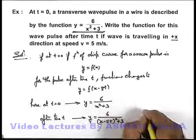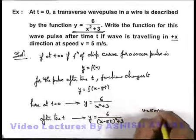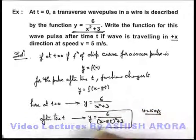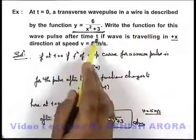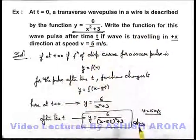As we are given that wave speed is 5 meters per second, so this will be the answer to our problem, where we are required to find the wave function after time t if the speed is 5 meters per second.